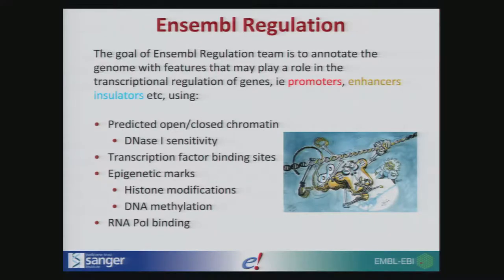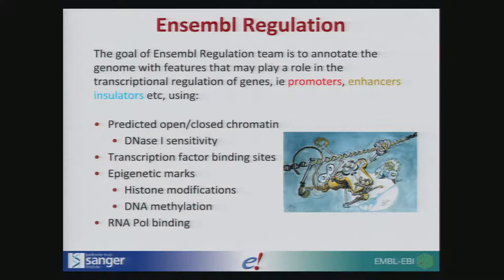Regulation is one section of what we do, and what we're trying to do is annotate the genomes with features that play a role in transcription and regulation of genes. We're talking about the actual features — the promoters, the enhancers, the insulators — and we're using data such as predicted open/closed chromatin from DNase I sensitivity, transcription factor binding sites, epigenetic marks including histone modifications and DNA methylation, and RNA polymerase binding. Most of these features are produced by the ENCODE project for the cell lines that they work with.